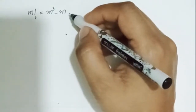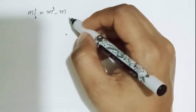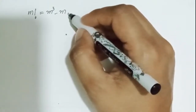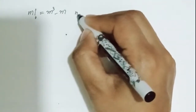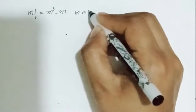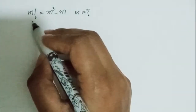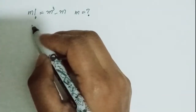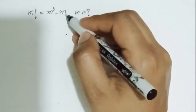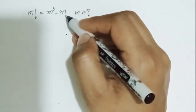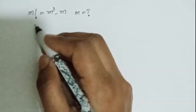Hi everyone. Here I have a very nice equation to prove. I have to find the value of m. The equation is: m factorial is equal to m cubed minus m. So let's start our question.